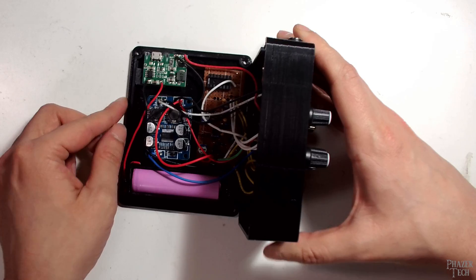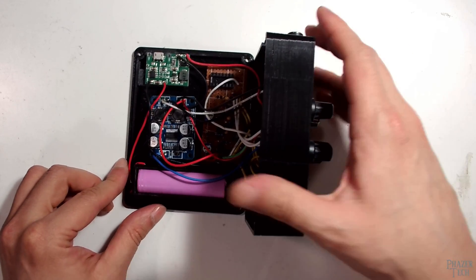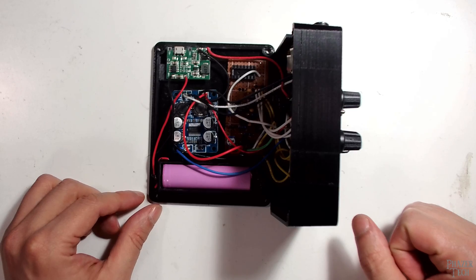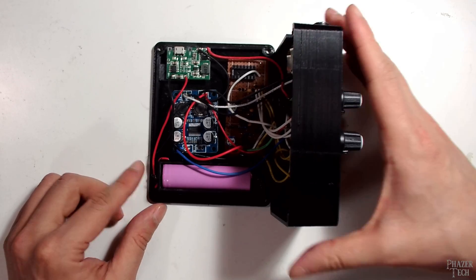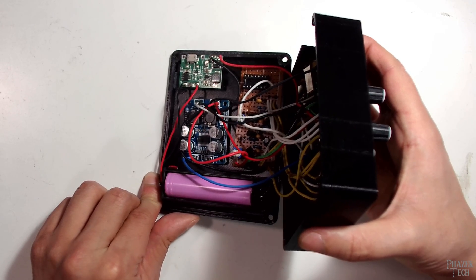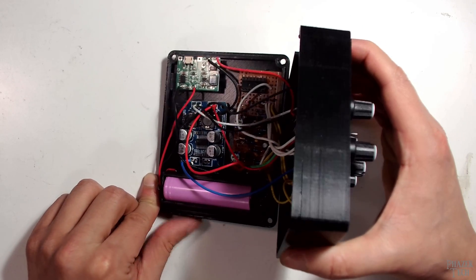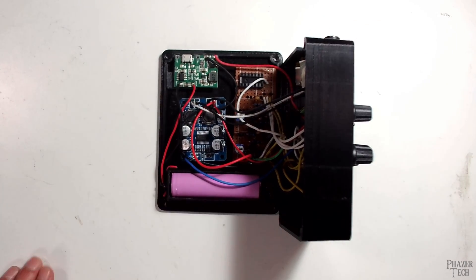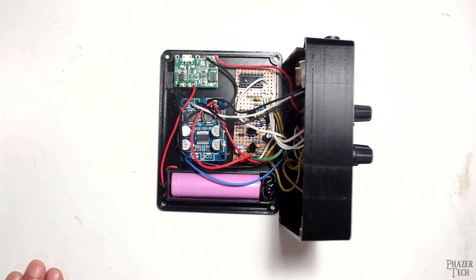Also, you might have noticed that this enclosure isn't metal. It's actually 3D printed from a design I found on Thingiverse. Generally speaking, I don't recommend doing this. Enclosures are made out of metal to help shield the device from external noise. But since this was just a prototype, I decided it would be more economical to print one instead.